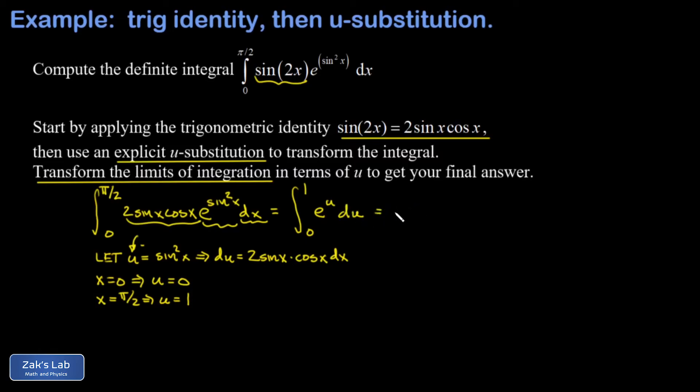And the antiderivative of e to the u is just itself. And I get e to the u evaluated from 0 to 1. I plug in the upper limit and I get e. Plug in the lower limit and I get e to the 0, which is 1. So the value of this integral is e minus 1. And we're done.